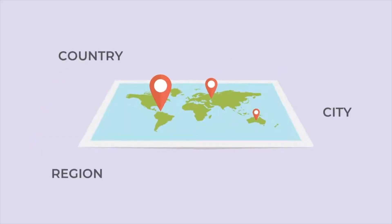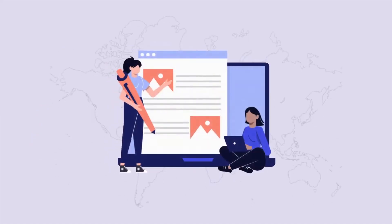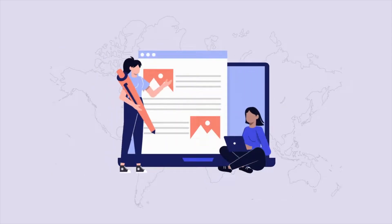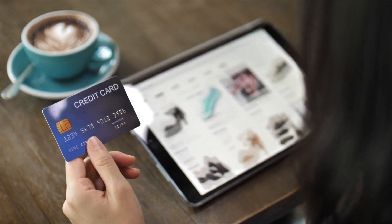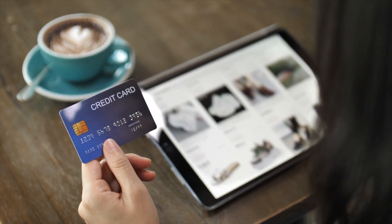GPS data is another method. Some apps, particularly mobile apps, can access your device's GPS location to pinpoint your exact area. If your GPS location doesn't match the required region, then you're out of luck. Payment information is also used — some platforms verify your location through your payment details. For example, if you try to use a credit card from a different country, they may block you based on the bank's registered location. These methods make it possible for websites and apps to determine where you are and what you should or shouldn't be allowed to see.